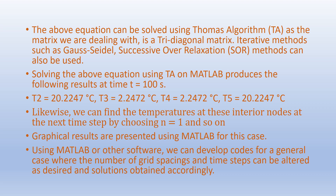Solving the above equations using the Thomas algorithm in MATLAB produces the following results at time t = 100 seconds. The outer interior nodes T2 and T5 show temperatures of 20.2247 degrees Celsius. The inner nodes T3 and T4 show temperatures of 2.2470 degrees Celsius. Likewise, we can find the temperatures at these four interior nodes at the next time step by choosing n = 1, and so on. Graphical results are presented using MATLAB, where we can develop code for a general case in which the number of grid spacings and time steps can be altered as desired.